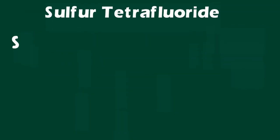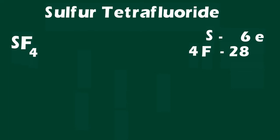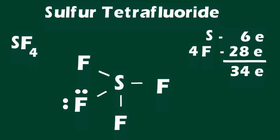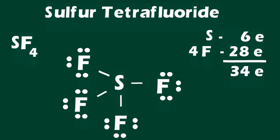The last Lewis structure we will be looking at is sulfur tetrafluoride. This molecule has 34 valence electrons. After drawing out the Lewis structure and distributing the electrons appropriately, we have two electrons remaining. Sulfur is an element located beyond the second row of the periodic table, which means it can have an expanded octet — called hypervalence or hypercoordination. We can place the two remaining electrons on the central sulfur atom to complete the Lewis structure.